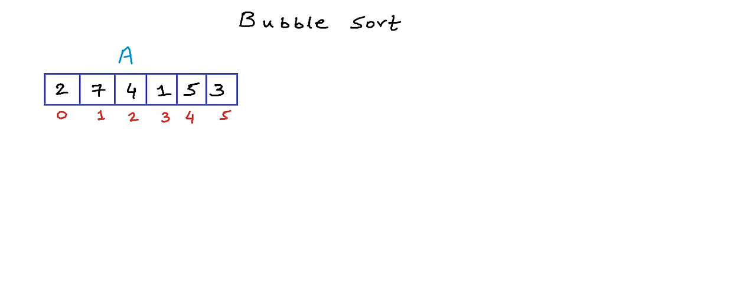We will not scan the array for no reason. When we are scanning and at a particular position, we will compare the element at that position with the adjacent element at the next position. So if we are at the 0th position, we compare element at 0th position with element at 1st position. If the current element is greater than the next, we swap the two. In this case, 2 is not greater than 7, so we move on. At position 1, 7 is greater than 4, so we swap — 7 moves to index 2, 4 moves to index 1.